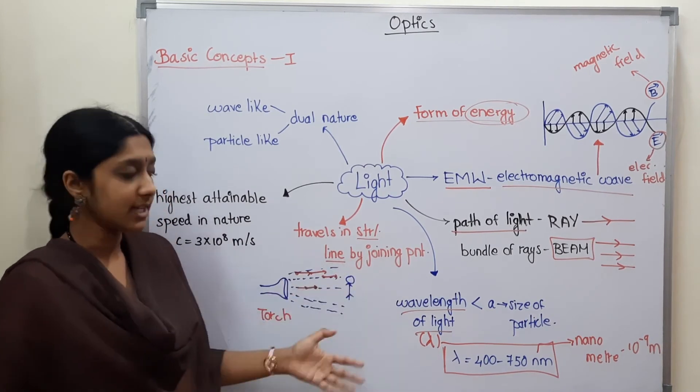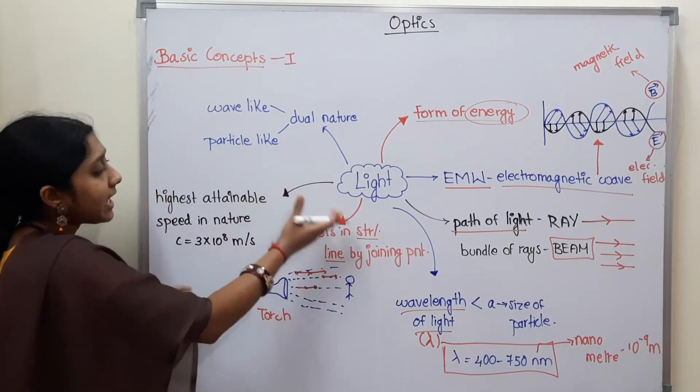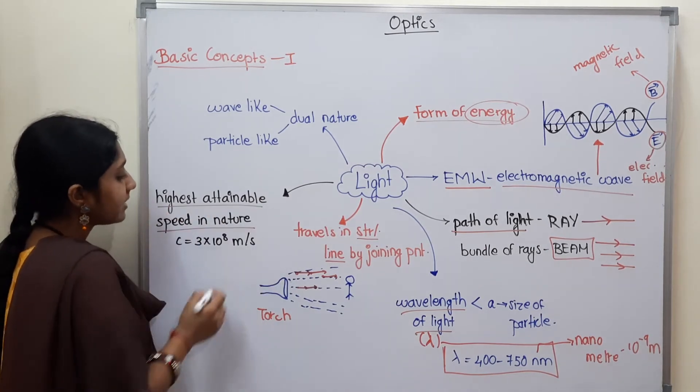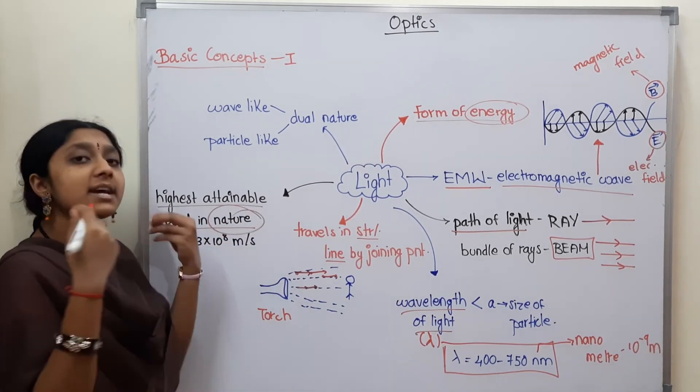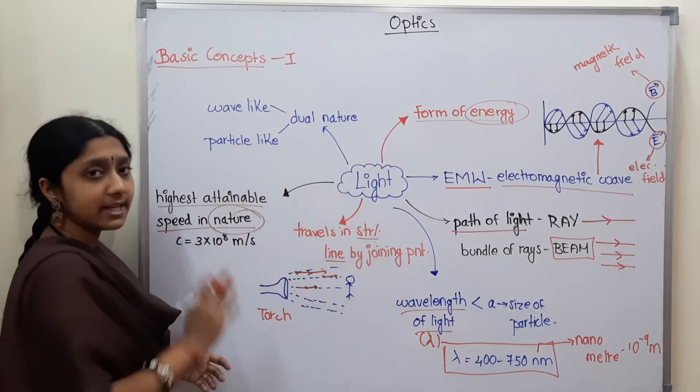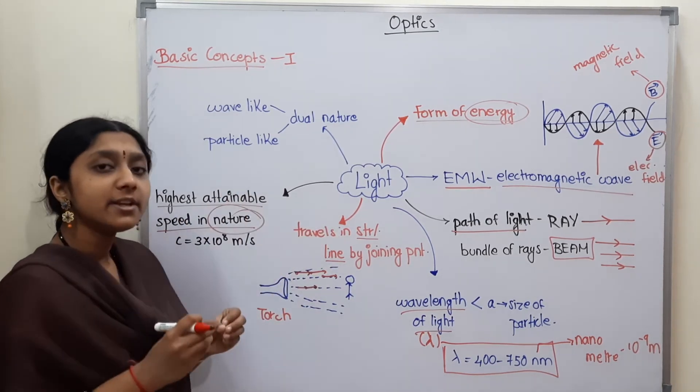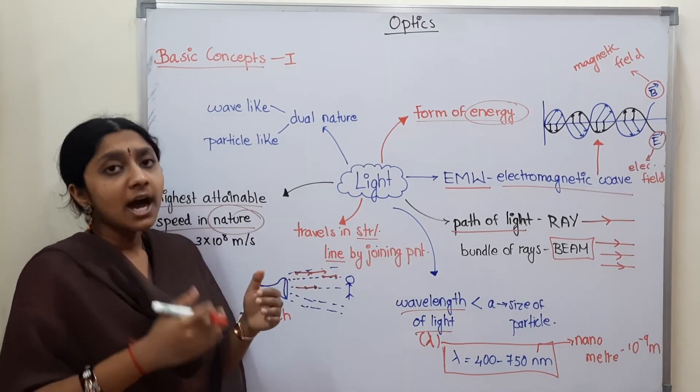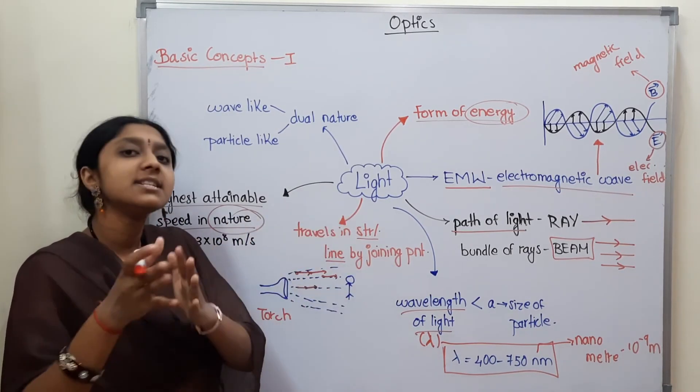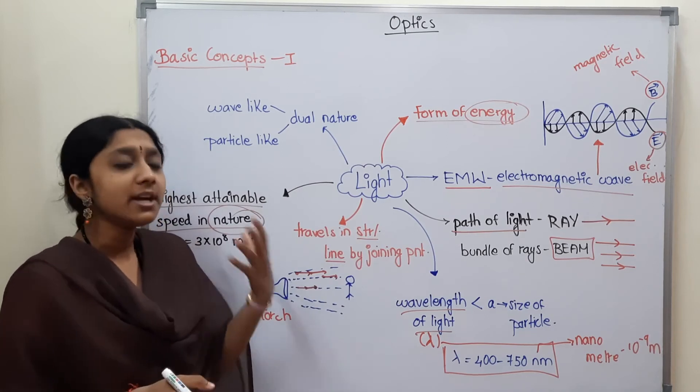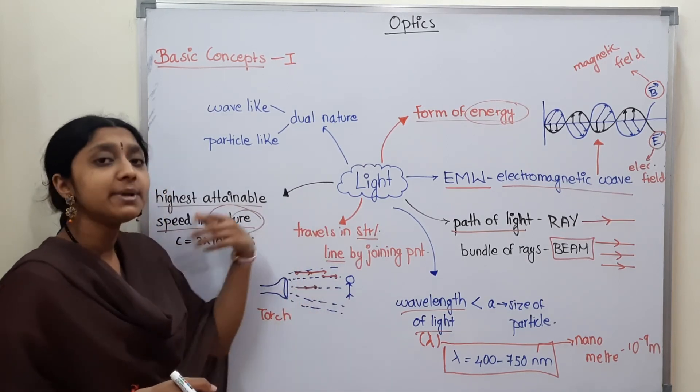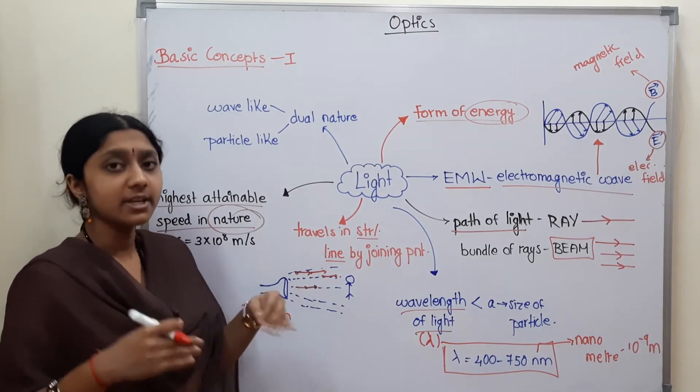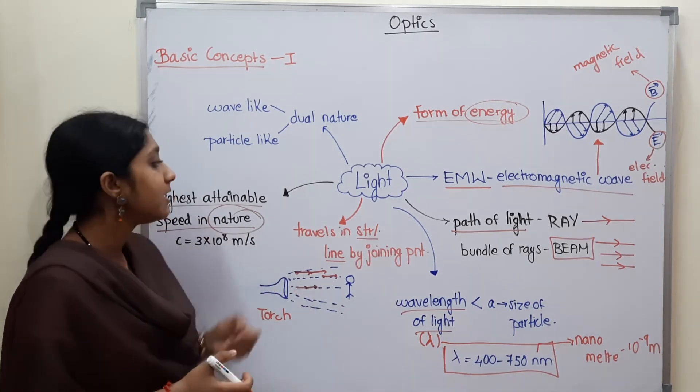Next, this light is the highest attainable speed in nature. In nature, maximum speed is light. In nature, that's why we measure in light years. Now how does it go to moon or planets? How does it go in light years?